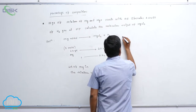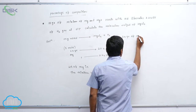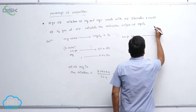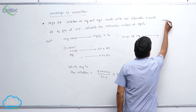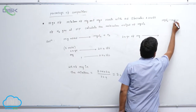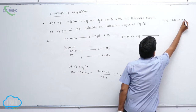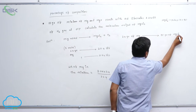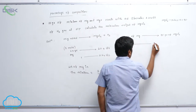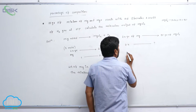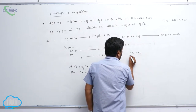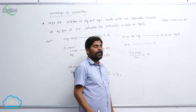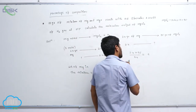Now, 24 grams of magnesium produces magnesium chloride. The molecular mass of MgCl₂ is 24 + 71 = 95 grams. So 2.4 grams of magnesium produces 2.4 × 95 ÷ 24, which approximately equals 9 grams of MgCl₂.